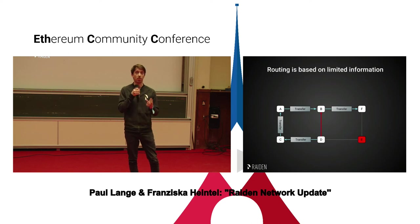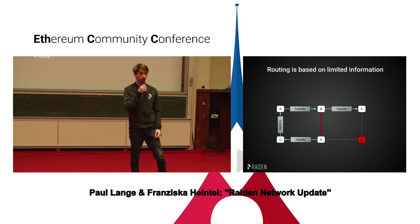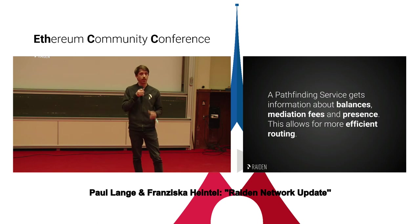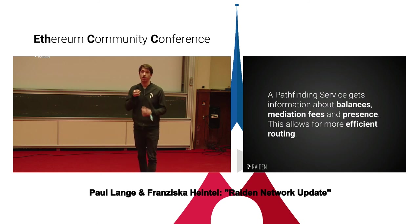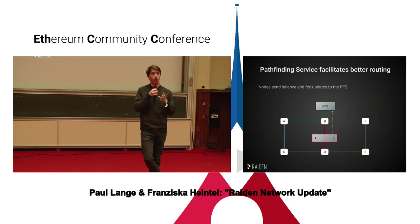We saw there are a lot of problems, and you can imagine as the network grows these become more complicated. If we use this backtracking algorithm without good knowledge about channel states, it's going to end in a big mess and will increase the latency of all payments quite a lot. So what we do instead is create a pathfinding service. This service will have better knowledge about the channel balances, and later about mediation fees for each channel, and will also know about the presence or online state of different nodes in the network.